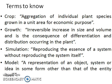Before entering into crop productivity and modeling, let us have an idea about some important terms. The first one is crop. A crop is defined as an aggregation of individual plant species grown in a unit area for economic purpose. The difference between crop and plant: a plant is a living organism growing in a permanent site, which may have a leaf, root, stem, etc. — it can be a tree, herb, shrub, or grasses. But a crop is an aggregation — a group of individual plant species grown in a unit area for economic purpose.